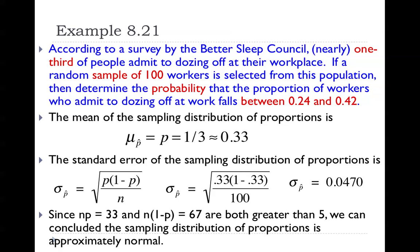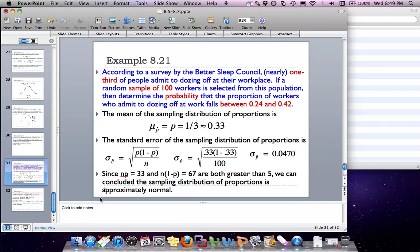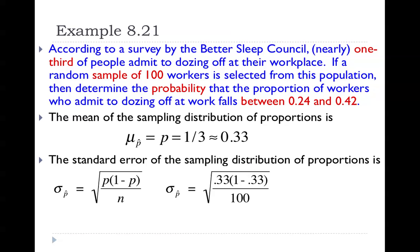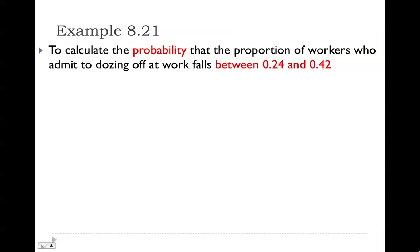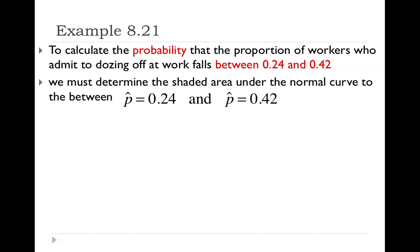As a double check: if you take np, you get 33. If you take n times 1 minus p, you get 67. Both of those are greater than 5, so you definitely have a bell curve — the shape of this distribution is approximately normal. To find the probability, we're looking at the area under the curve between a p̂ of 0.24 and a p̂ of 0.42.